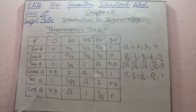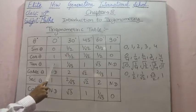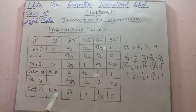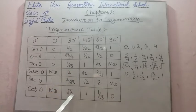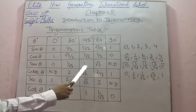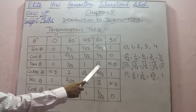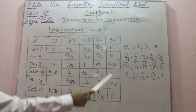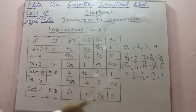Now cot theta is the reciprocal of tan theta. So: reciprocal of 0 is not defined; reciprocal of 1/√3 is √3; reciprocal of 1 is 1; reciprocal of √3 is 1/√3; and not defined becomes 0.